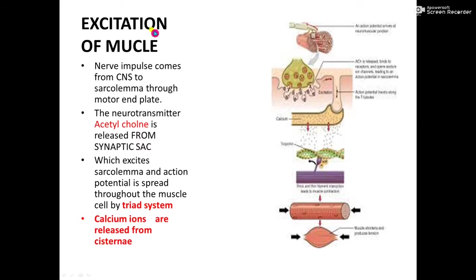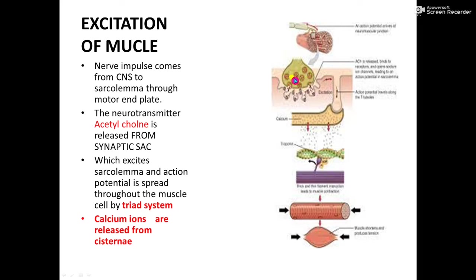Step one: excitation of the muscle. In order to contract a muscle fiber, the impulse should come from the central nervous system — from the brain. From the brain, the impulses come to the effector organ, which may be a hand or leg. The impulse comes to the motor neuron, and the end of the teledendrites contains synaptic sacs. When the impulse comes to the teledendrites and into the synaptic sacs, neurotransmitters are present which are excreted into the synaptic cleft.